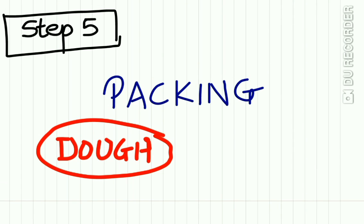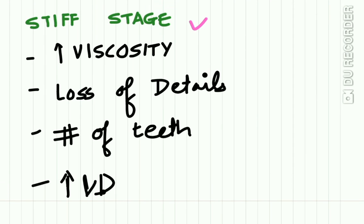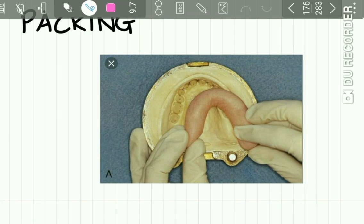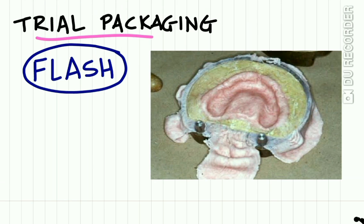Step 5 of compression molding technique is packing, done at dough consistency. If done at the sticky stage, when monomer content is very high, there is increased risk of porosity and the material may flow out of the flask. If done at the stiff stage, there is too high viscosity and the material cannot be molded properly to record fine details; there may also be fracture of teeth and increased vertical dimension of the denture.